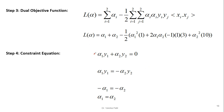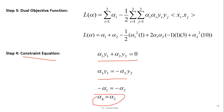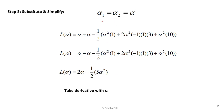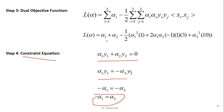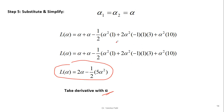From the constraint equation alpha_1*y_1 + alpha_2*y_2 = 0, we get alpha_1*y_1 = -alpha_2*y_2, which implies alpha_1 = alpha_2. Since both alphas are equal, we replace them with a single variable alpha and substitute into the dual objective, simplifying the equation.